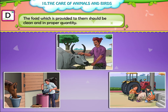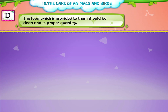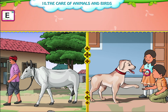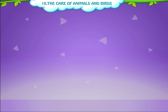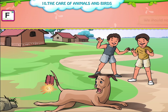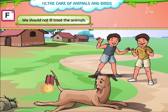The food which is provided to them should be clean and in proper quantity. They should be taken out daily in open space so that they can move freely. We should not ill-treat the animals.